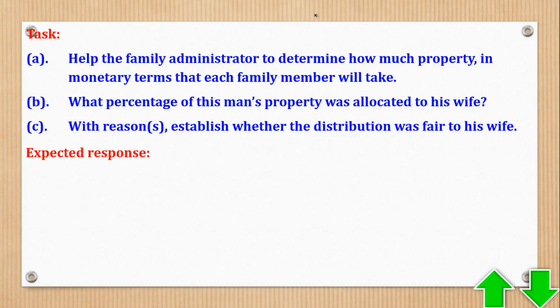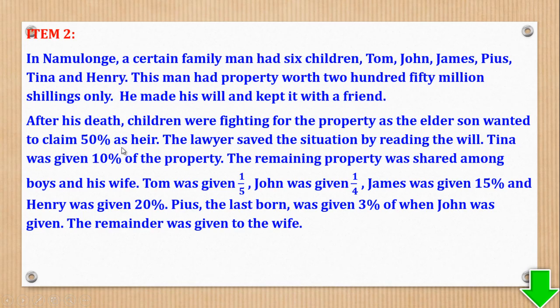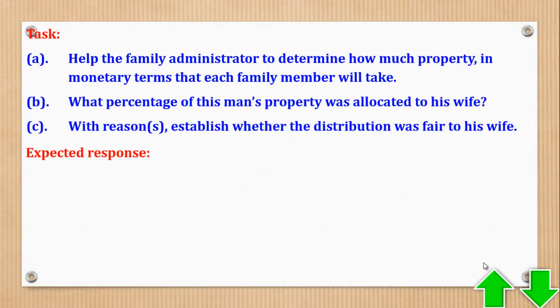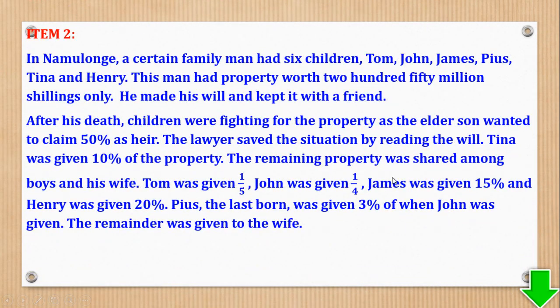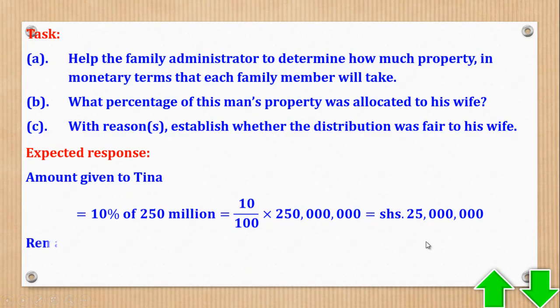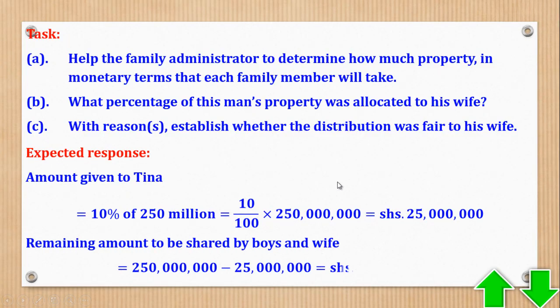We shall begin. First of all, we'll go person by person, child by child, and end with the wife. The first one to get was the girl who got 10% of the property, 10% of the total property, which is 250 million. So the amount which was given to Tina will be 10% of the 250 million, which is 10 over 100 times 250 million. Using the calculator, it gives you 25 million. So that is what Tina got. Next, they told us the remaining property was shared among the boys and the wife. So we need to first get the remainder after that. So remainder will be the total minus what Tina got, which will be 225 million.